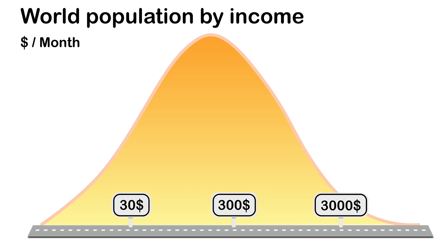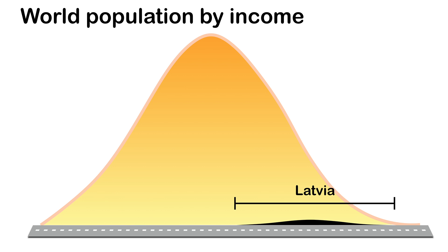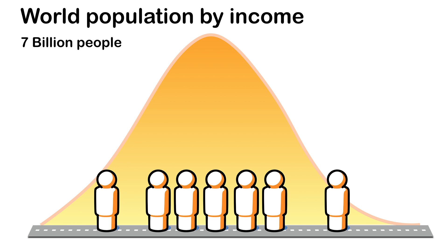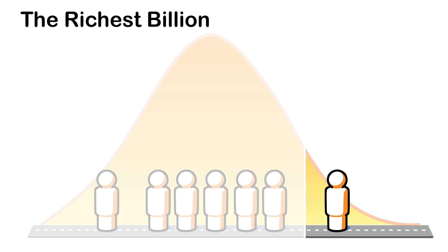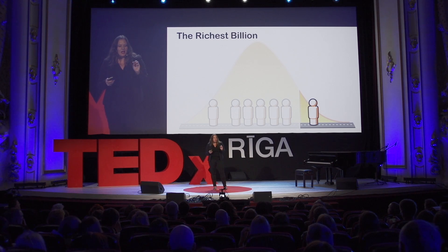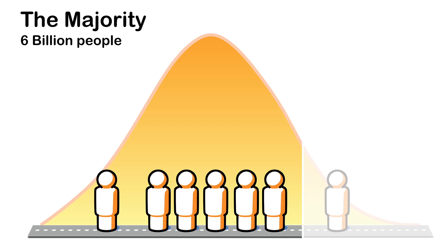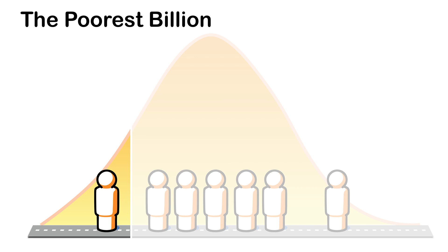This is the world income distribution. The mountain shape represents the amount of people in the world. Right now, Latvia is somewhere here at the top, and the homes I showed you are roughly somewhere here. To simplify: the seven billion people of the world are distributed something like this. When I was doing the comparisons with Latvia and other countries, I was basically comparing the top one billion richest of the world. But what about the majority — the other six billion people in the world? What does it look like?